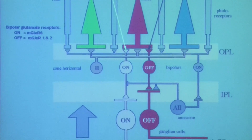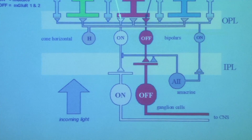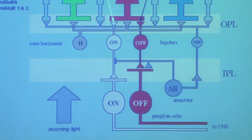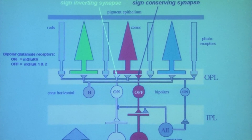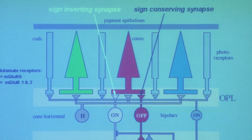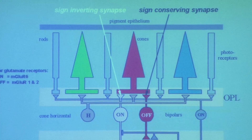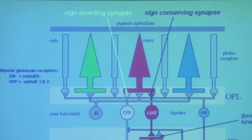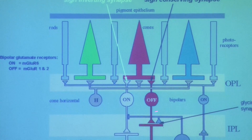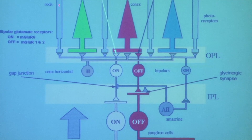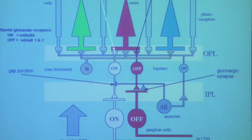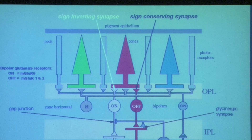At the ganglion cell level, the two major classes are also on and off. For rods, all connections to bipolar cells are sign-inverting synapses — there is only one type in humans and primates. To create on and off for rods, it is accomplished in the inner retina via the A2 amacrine cell, which is a glycinergic synapse, and also makes a gap junction connection with the on bipolar. This creates a double-ended system for the rods as well as for the cones.